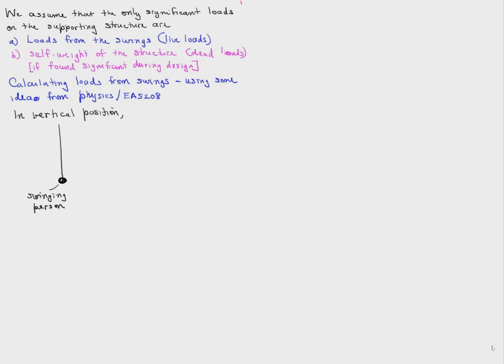So we can think of a swing like a pendulum. In the vertical position, suppose it has a velocity v.